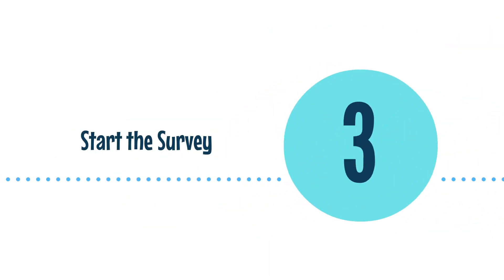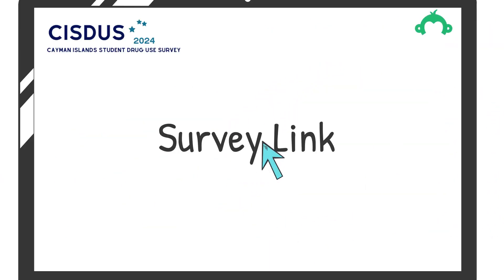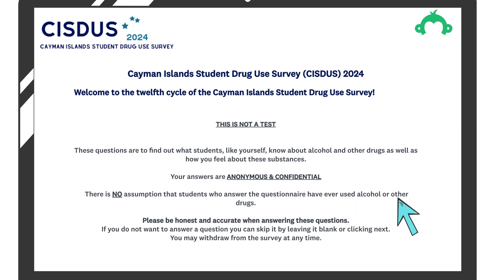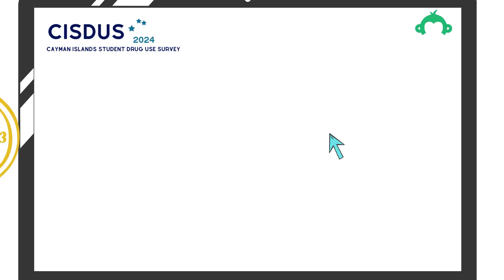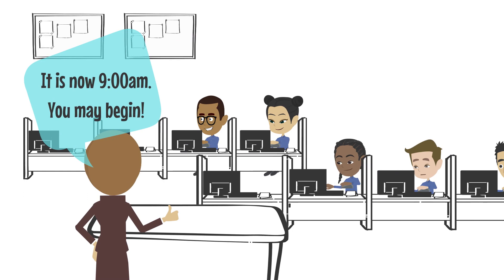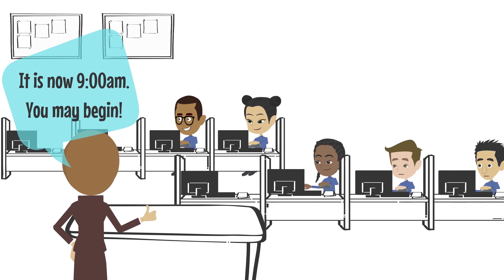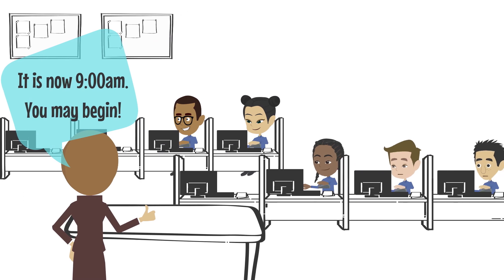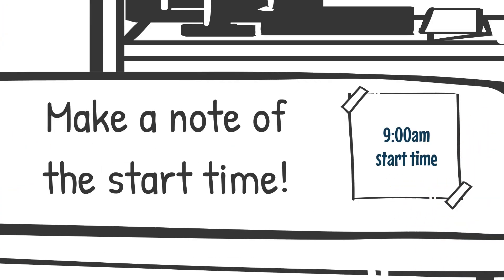Step 3. Have all students open the survey link at the same time. This will bring them to the welcome page of the survey. At this point, ask them to wait until you instruct them to start. The survey should take between 20 to 30 minutes to complete. When everyone is ready, announce the time that the survey is starting, and tell students that they may begin. Make a note of the survey start time for yourself.